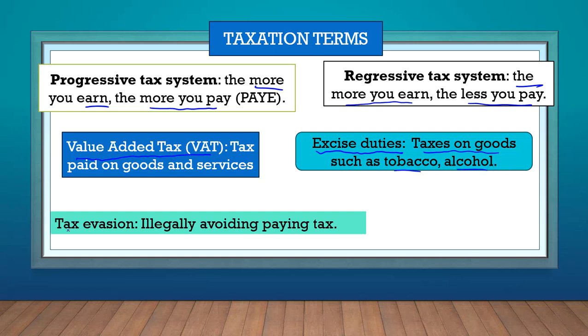The last taxation term is tax evasion. Tax evasion is when someone illegally avoids paying tax, and SARS can prosecute those people who illegally avoid paying tax.